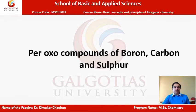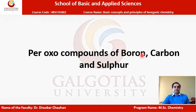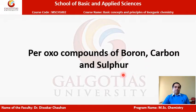Hello everyone. In this video, we will discuss about peroxyl compounds of boron, carbon and sulfur. There are different types of peroxyl compounds for boron, carbon and sulfur. We will discuss about the borax, that is the peroxyl compound of boron, sodium percarbonate, which is the peroxyl compound of carbon, and the two peroxyl compounds of sulfur: peroxy monosulphuric acid and peroxydisulphuric acid.